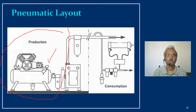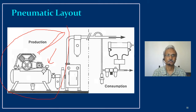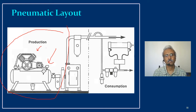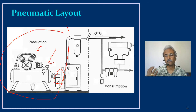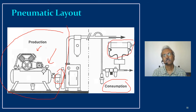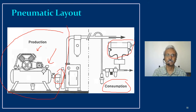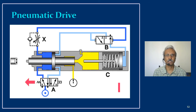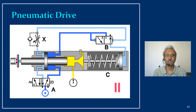Here is a simple pneumatic layout. On the left you have the compressor that produces compressed air, and a storage tank. Filters are used because when the air goes into the actual robotic line it should be free of dust, moisture, oil, or any other impurities. On the right side is where the air is consumed — you can see a pneumatic cylinder where the compressed air is distributed to various locations as needed.